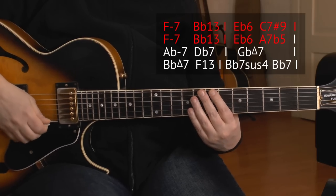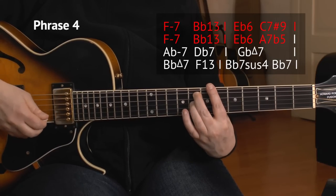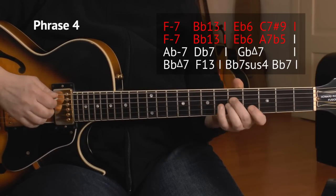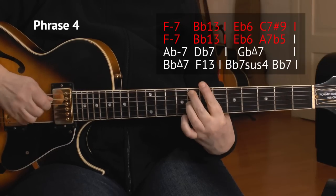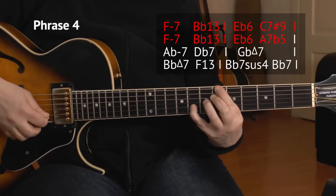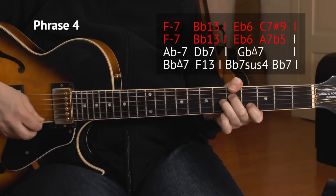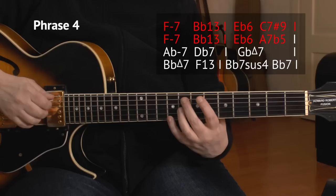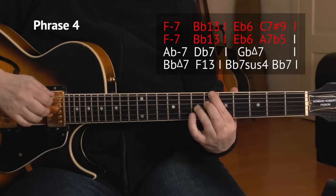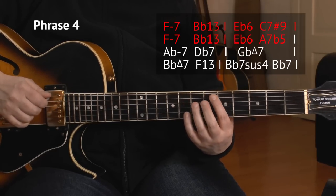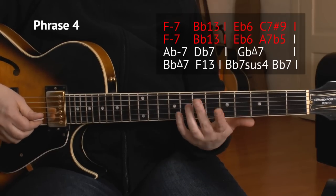Welcome to the B section, this is phrase 4 and these are the first 4 bars of the B section. We start with a F minor 7 chord, we actually have a 2, 5, 1, 6. We have F minor, then the 5 chord is a B flat, the 1 chord is an E flat major, and the 6 chord is C7.